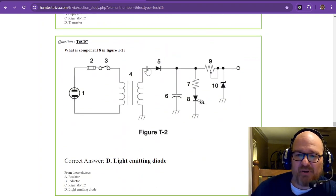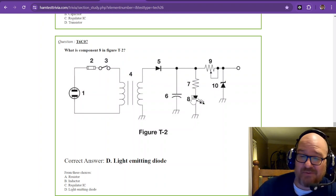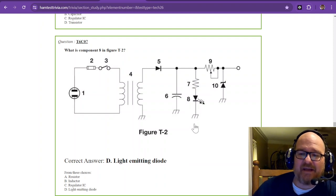What is component eight? Well, let's look at component eight right here. Well, at first glance, it's a diode of some sort. That arrow tells you right away it's a diode, the arrow with a line. But this one has two squiggles coming off of it. And that is light. This is a light emitting diode or an LED.